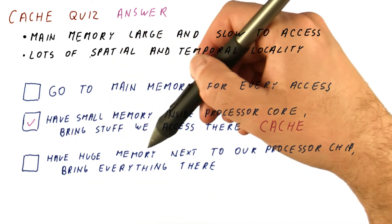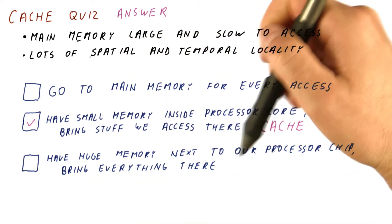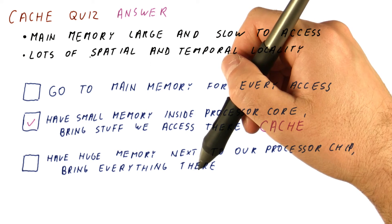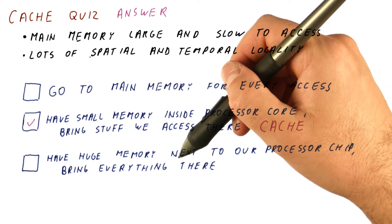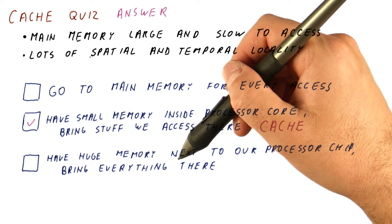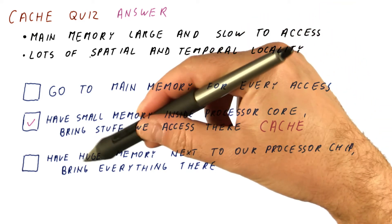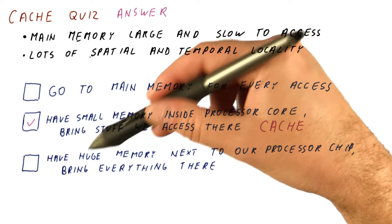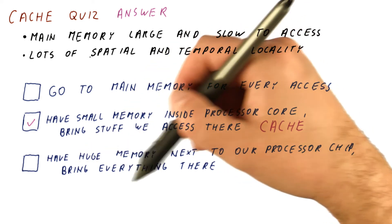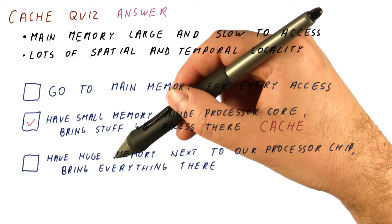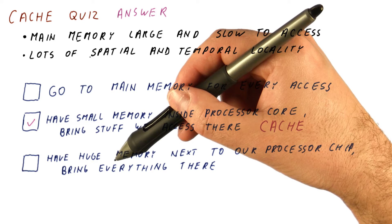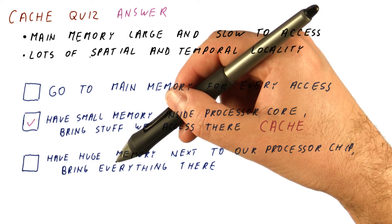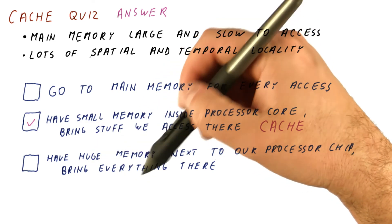And finally, having a huge memory next to our processor and then bringing everything in there solves some of the problems of going to main memory, because this memory is hopefully somewhat closer to our processor. But this memory is still going to be large and thus very slow. This is very similar to just building a library closer to home — yes, you are saving some time on each access, but most of the time spent per access is still there, simply because it takes a while to find data in such a large memory.